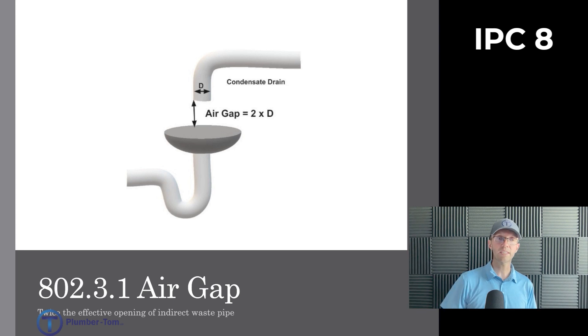Here's an example. We have a condensate drain. How big are condensate drains typically? Three quarter of an inch. So we take our three quarters, times it by two. Our air gap should be one and a half inches from the end of our indirect waste pipe or the condensate drain to the floor drain it's dumping into.